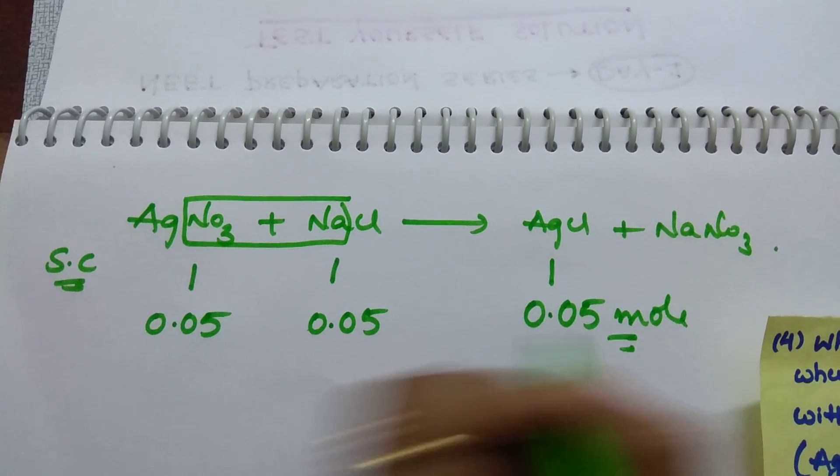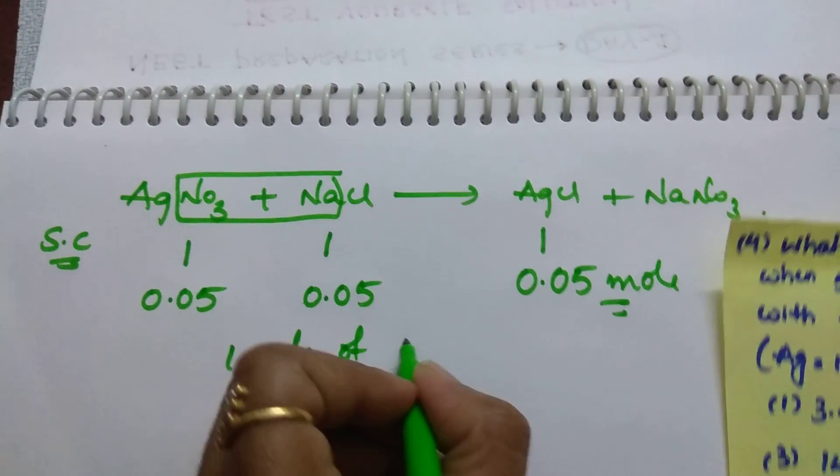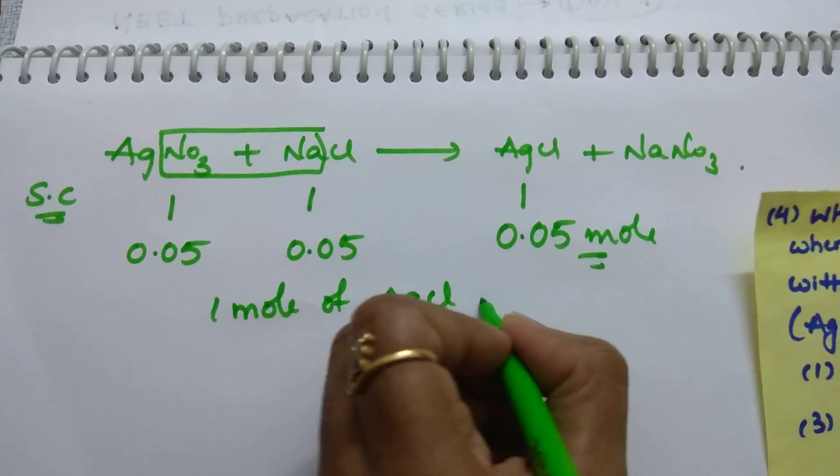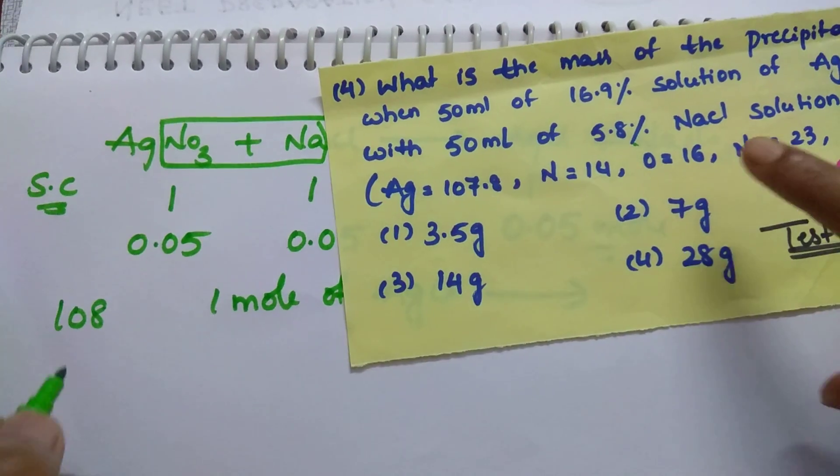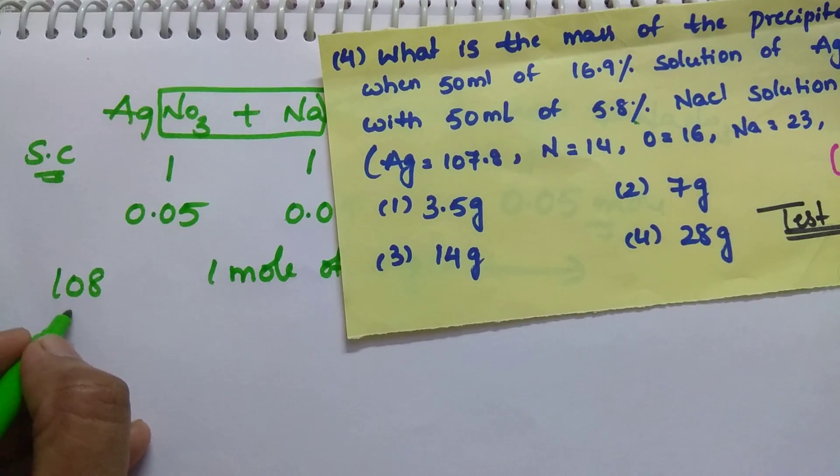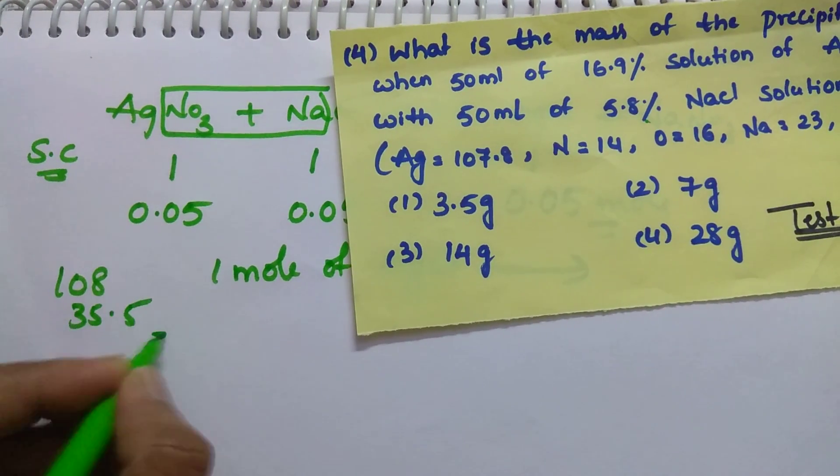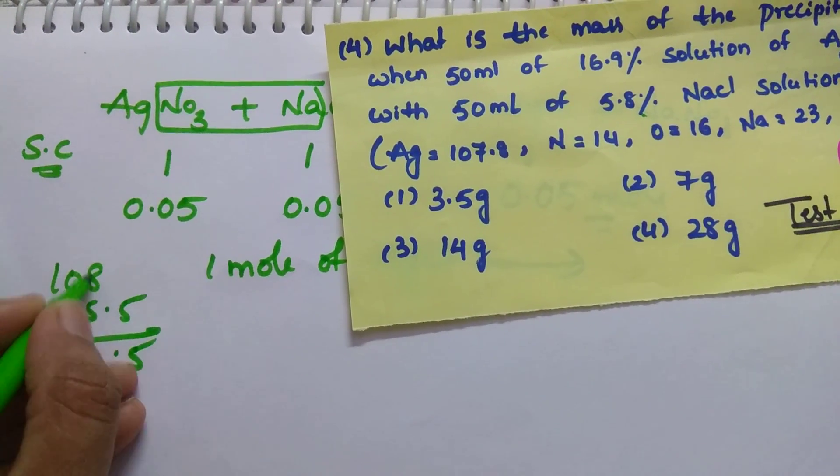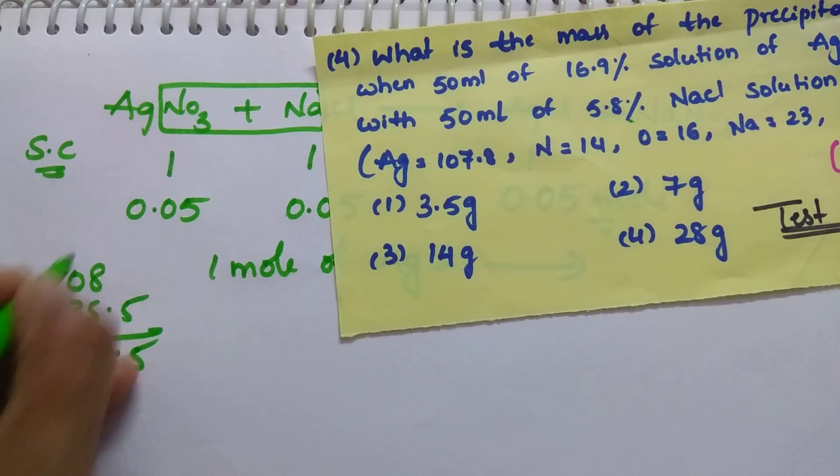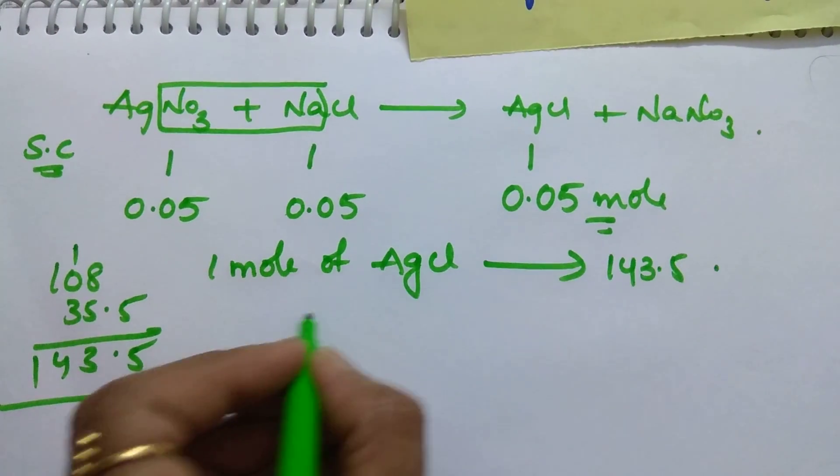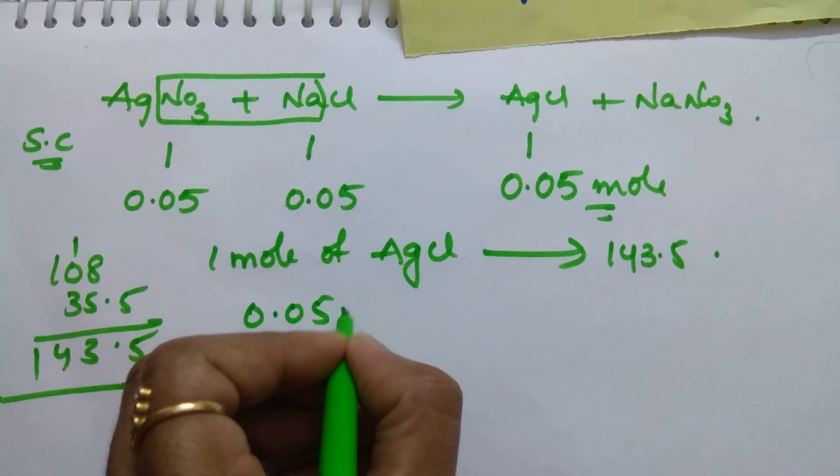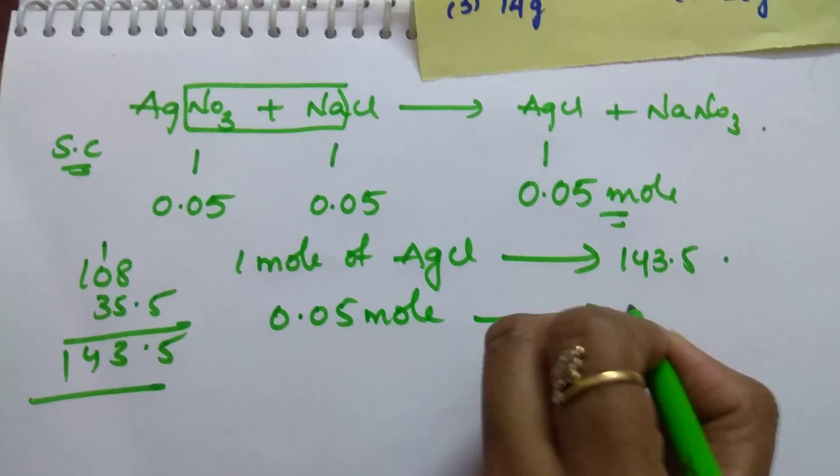1 mole of AgCl. What is the molecular weight? Silver is around 108, and chlorine is 35.5. So we will get 143.5. Then 0.05 mole consists of AgCl how much?